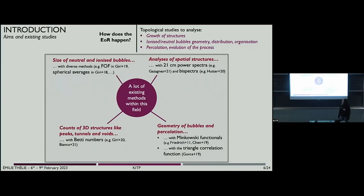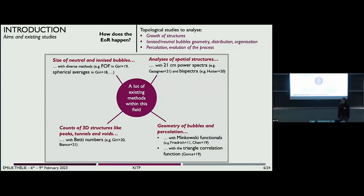My aim is to answer the question: how does the ionization happen? I'm studying the growth of structures, the ionized and neutral bubbles' geometry, evolution, distribution, the percolation, and also the global evolution of the process. This has already been done a lot in the literature. People have studied the size of neutral and ionized bubbles, spatial structures with 21-centimeter spectra, and also 3D structures like peaks, tunnels, and voids.